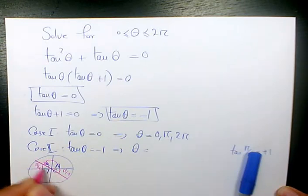So pi minus pi over 4 and 2 pi minus pi over 4.